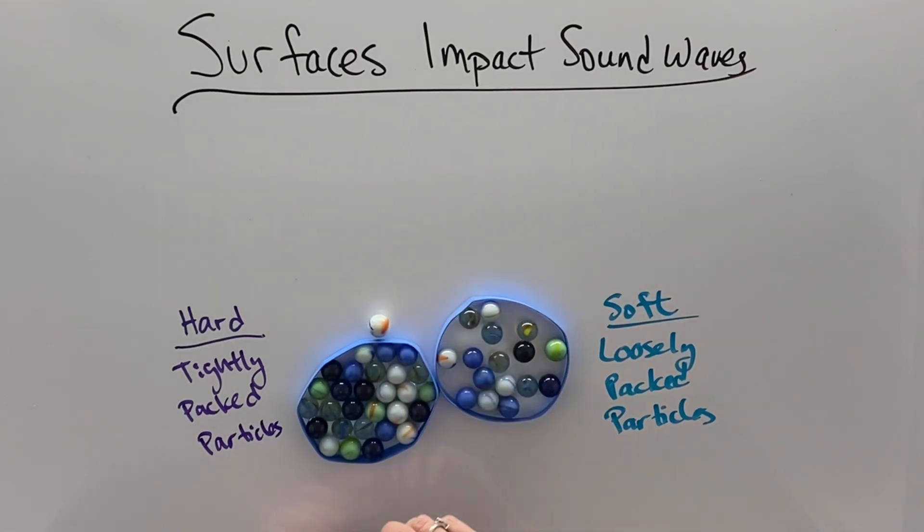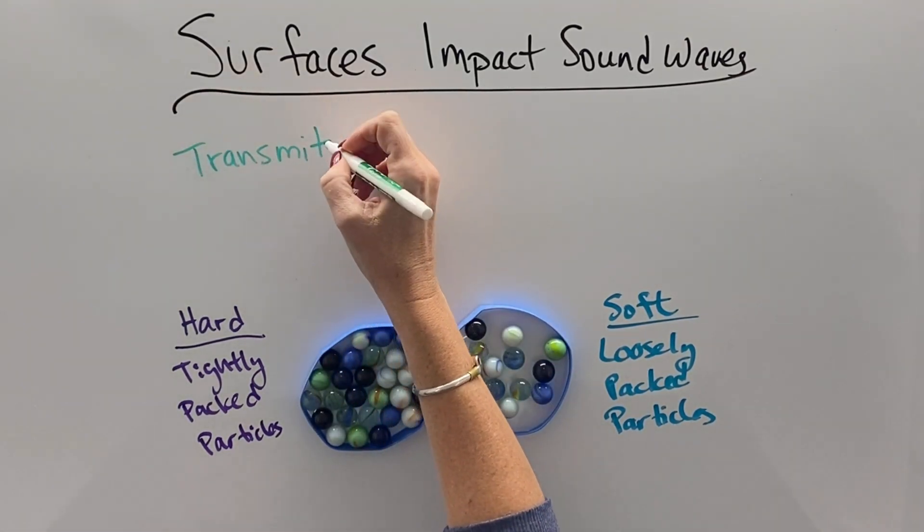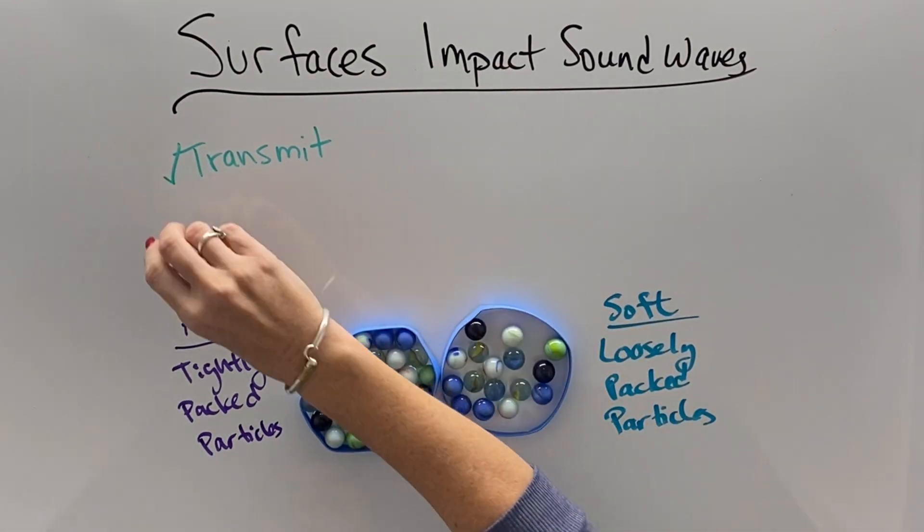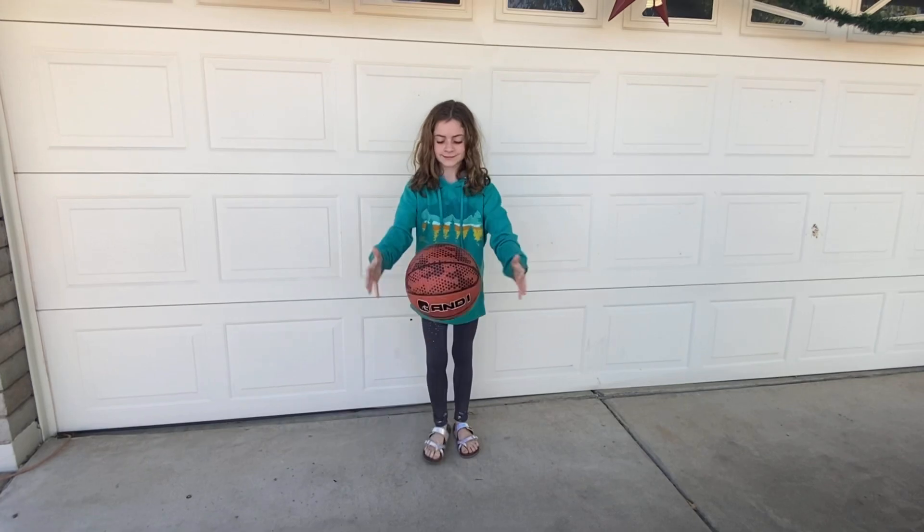So when I try to bounce a sound through a hard object, it will transfer or transmit. And we can also see that things will bounce off or reflect off of hard things like this basketball on the driveway.